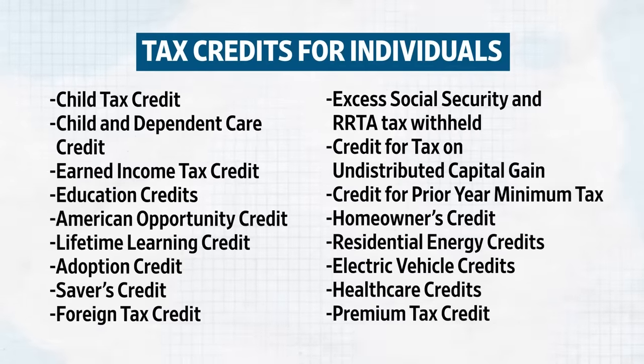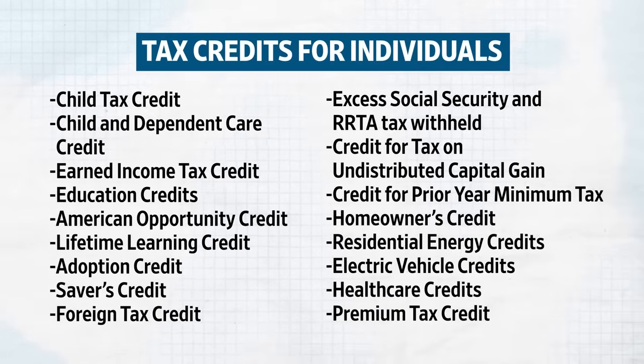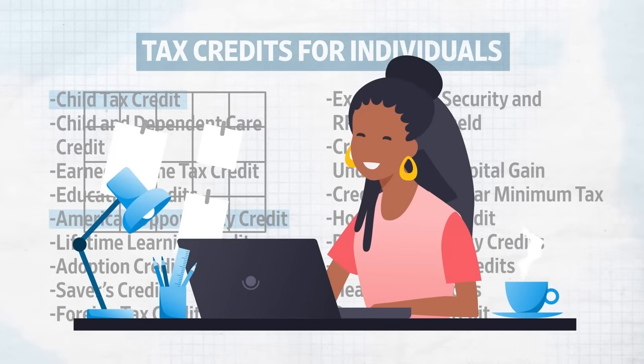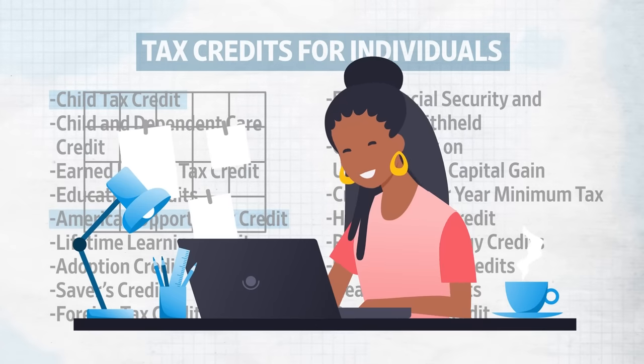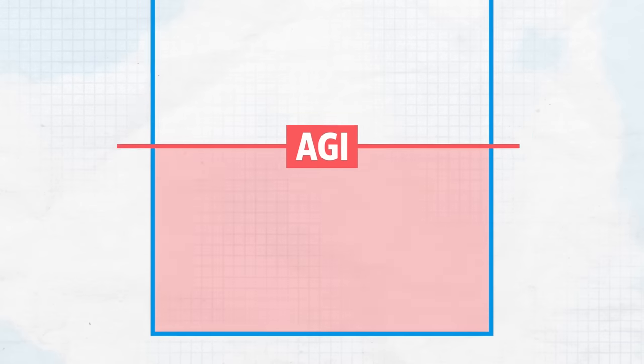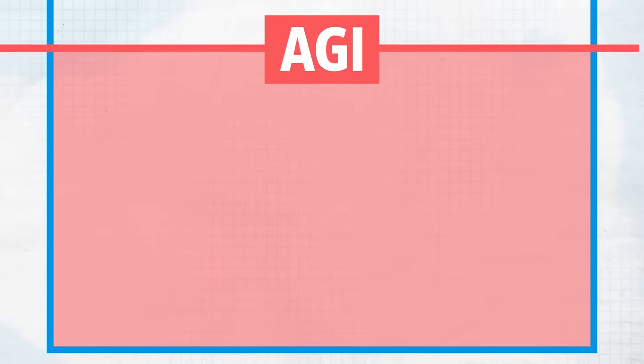There are also tax credits with eligibility tied to AGI for students and parents, like the American Opportunity Tax Credit or Child Tax Credit. But these situations don't apply to Olivia, so she doesn't get to claim tax breaks based on AGI this year. After you calculate your tax credits, you can take deductions and determine your actual tax bill. The more you understand about how the tax code works and how it keys off of this number, the easier it can be to figure out why you're getting to the bottom line number you're getting.